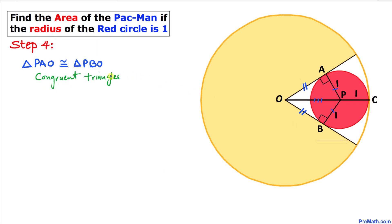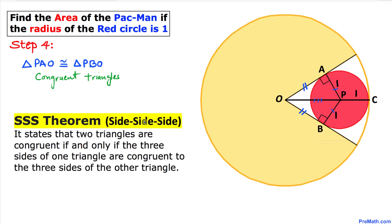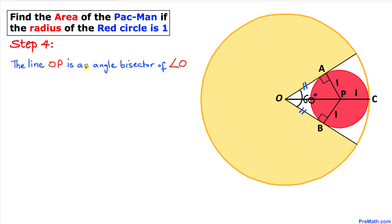Moreover, triangles PAO and PBO are congruent according to the side-side-side theorem: two triangles are congruent if three sides of one triangle are congruent to the three sides of the other. In our case, this side is congruent to the other, the radii are both one, and OP is their common side. So these two triangles are indeed congruent.